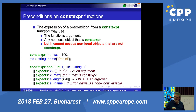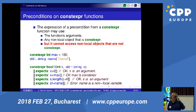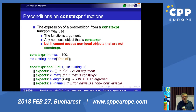For constexpr functions, the expression of a precondition may use function arguments and any non-local object that is constexpr, but cannot use non-local objects that are not constexpr, because you could not evaluate them in a constexpr context.